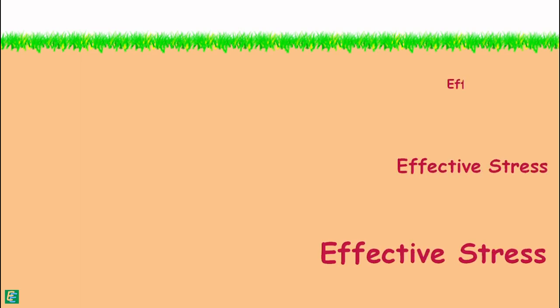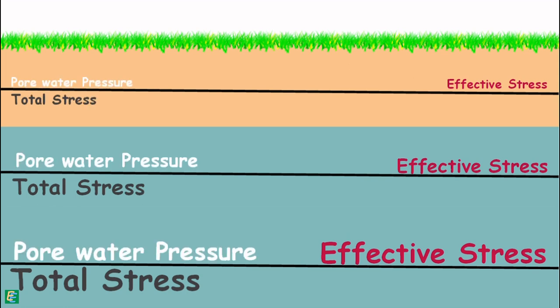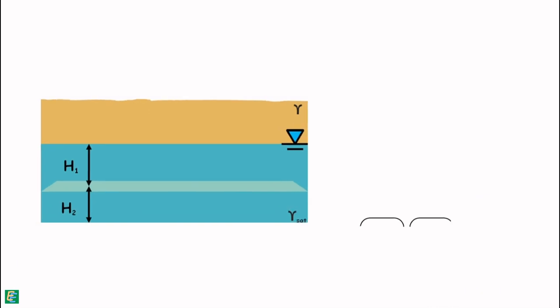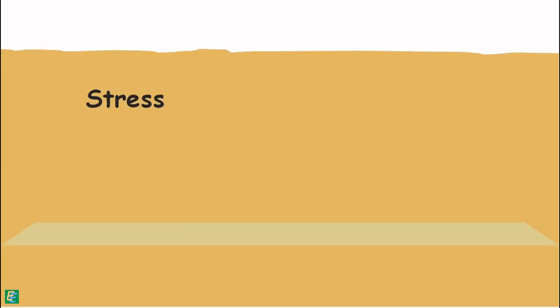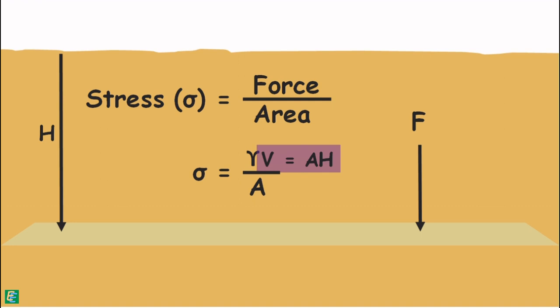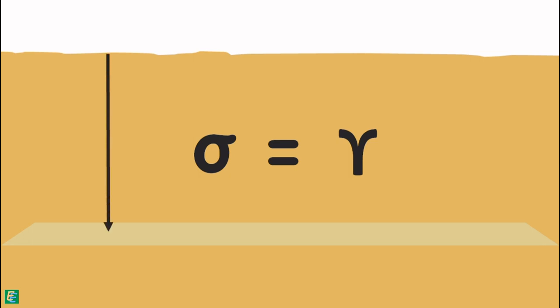Effective stress is different at different depths below the ground surface because total stress and pore water pressure change at different depths. We know that stress at any point or plane under the soil can be given as the force on that plane divided by the area of that plane. Force on that plane is the weight of soil above the plane, which is unit weight of soil multiplied by its volume. Volume is area multiplied by the height of the soil mass. So we can directly write this stress under any material as unit weight of the material multiplied by the height of the material above that point.